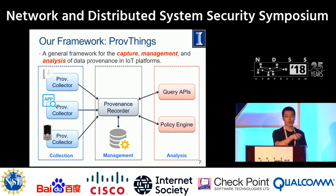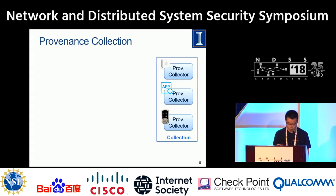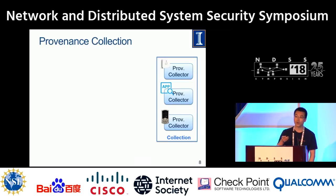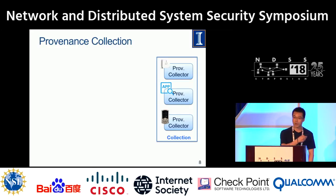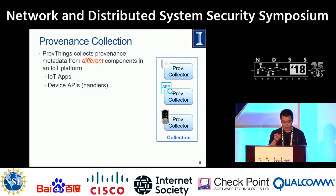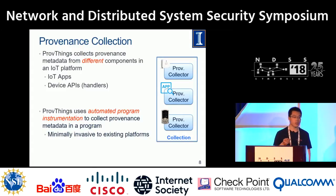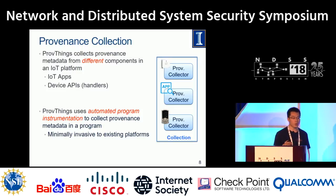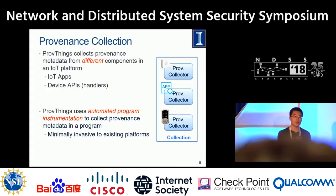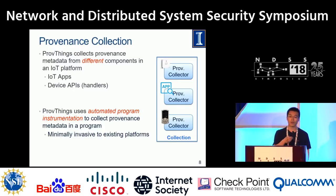For provenance collection, since things now become interconnected, we should collect data provenance not from a single device. We need to collect data provenance from different components in the system, for example the devices and the apps. When we have data provenance from different components, we can build a whole provenance graph of the system. We also perform automatic program instrumentation, which is minimally invasive to the existing platform.